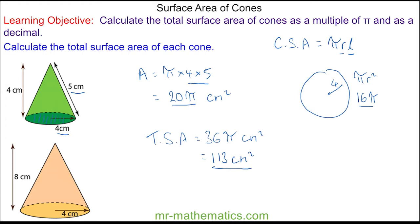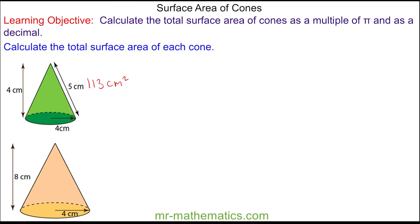Okay, let's work out the surface area of the next cone. Again we're going to use the formula: the curved surface area is equal to pi r l. But in this case the slant length is not given; however we do have a perpendicular height, which is eight centimeters.